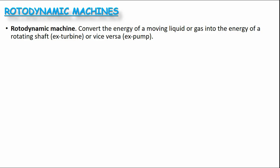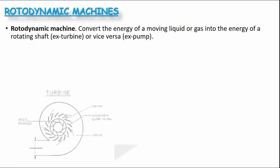As a definition, we can say the rotodynamic machine converts the energy of a moving liquid or gas into the energy of a rotating shaft. This example is turbine. And vice versa, when the rotating shaft energy converts to fluid energy, this example is pump.